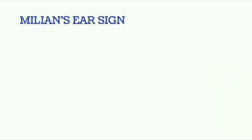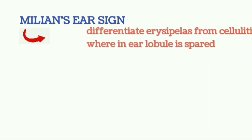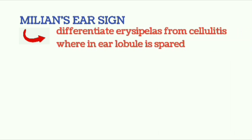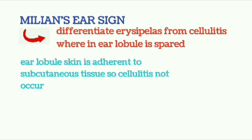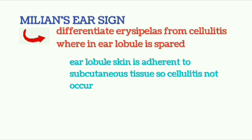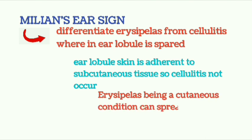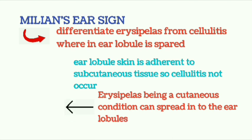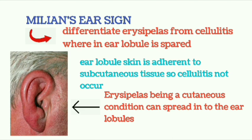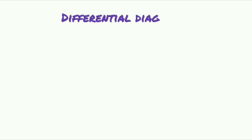Milian's ear sign is an important clinical sign used to differentiate erysipelas from cellulitis. In cellulitis, the ear lobule is spared because the skin of the ear lobule is adherent to the subcutaneous tissue, so cellulitis cannot occur there. But in erysipelas, being a cutaneous condition, it can spread into the ear lobule.